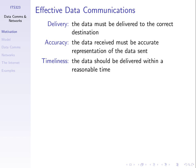How do we measure effective data communications? Three different things: delivery, accuracy, and timeliness. We want information delivered to the correct destination, we want what is delivered to be an accurate representation of what was sent, and we want it delivered in a short amount of time, in a timely manner.